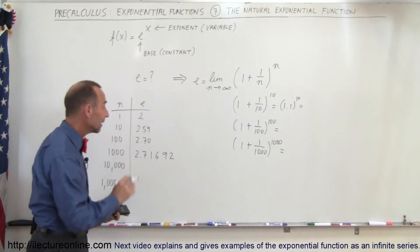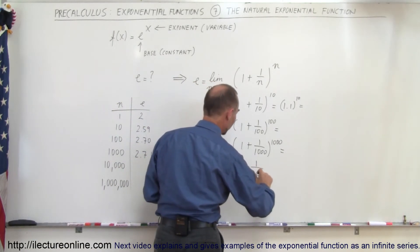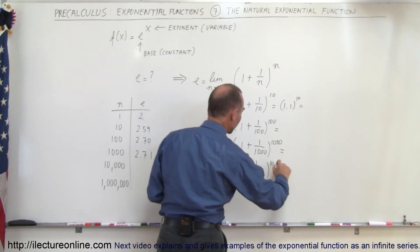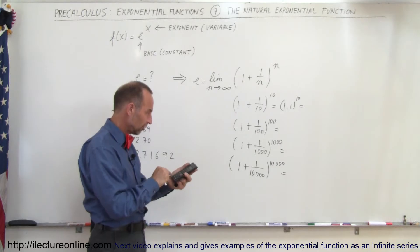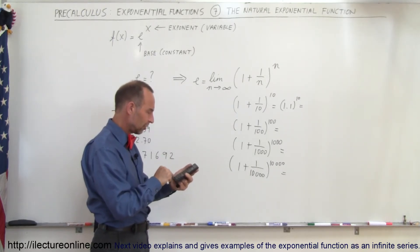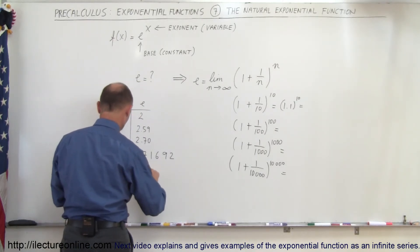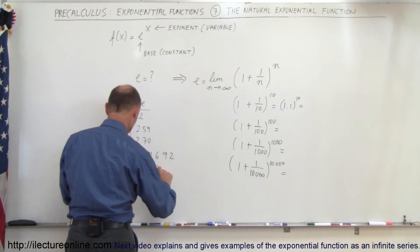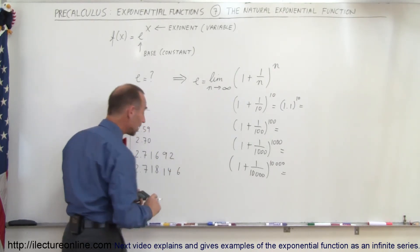Now let's go ahead and plug in 10,000. So 1 plus 1 over 10,000 raised to the 10,000 power is equal to 1.0001 raised to the 10,000 power, which equals 2.718146.